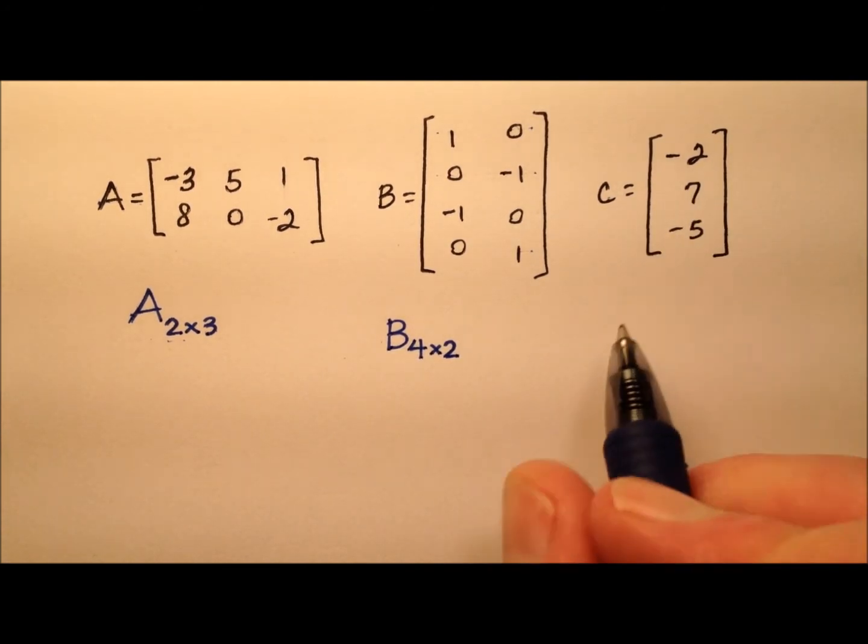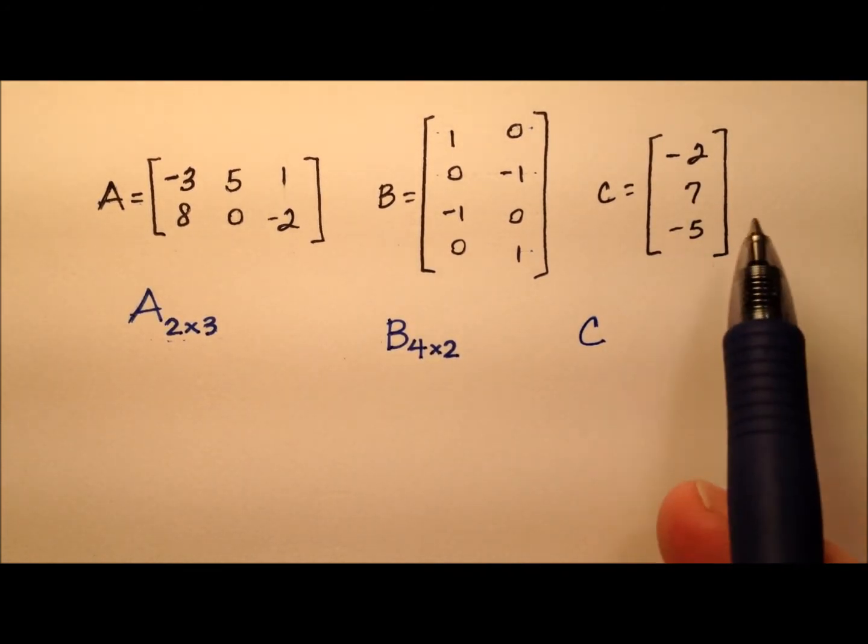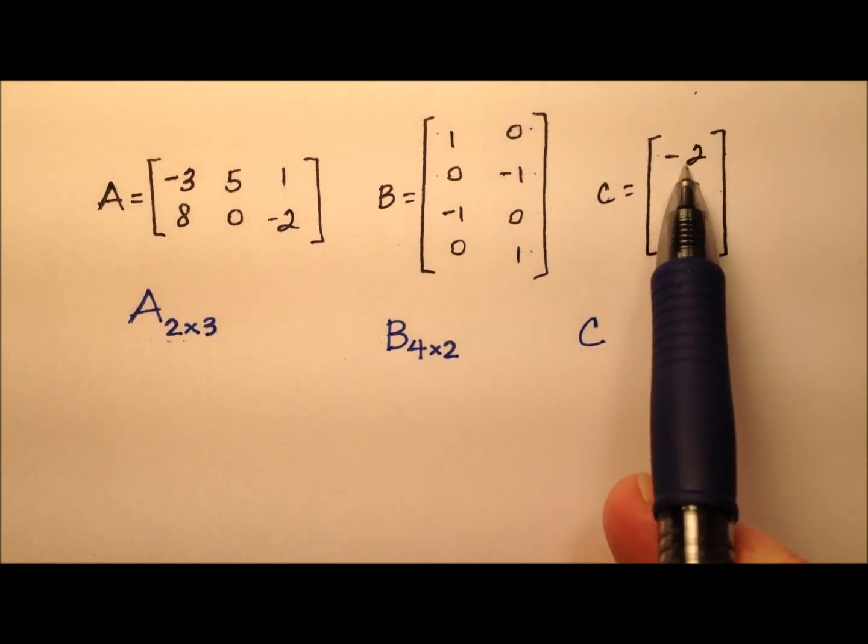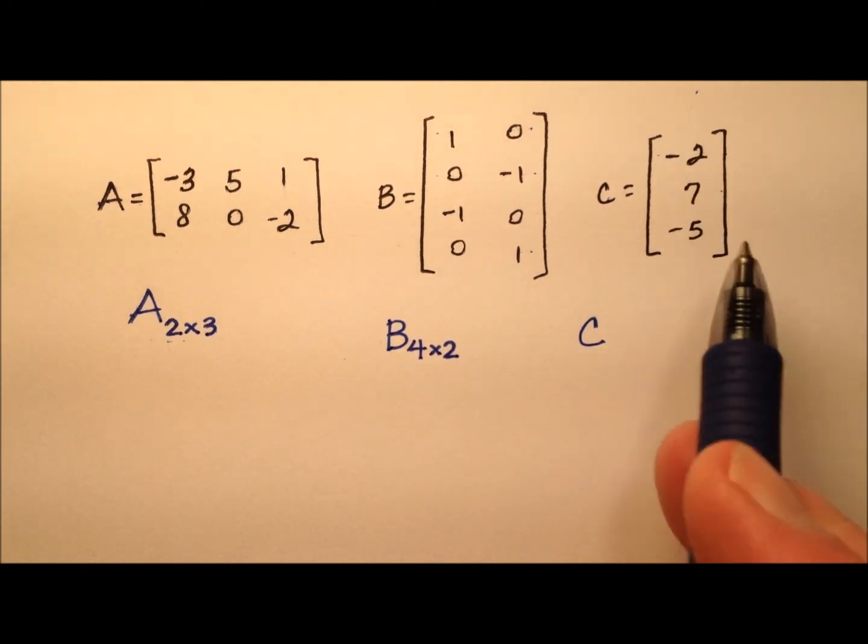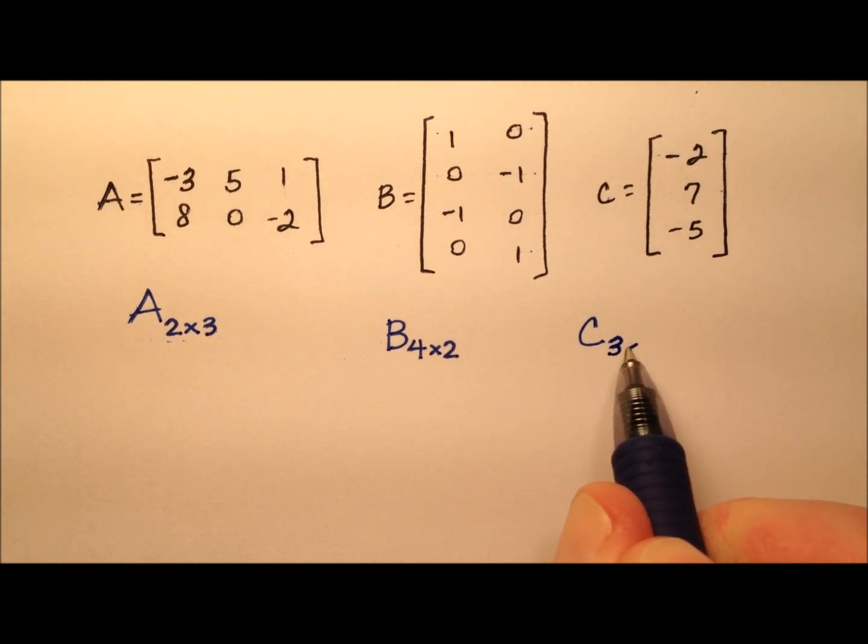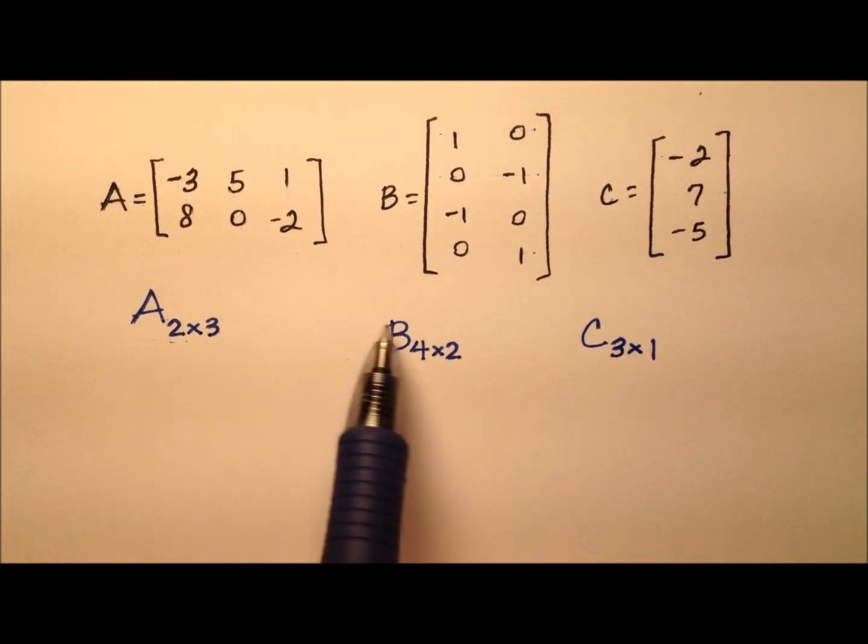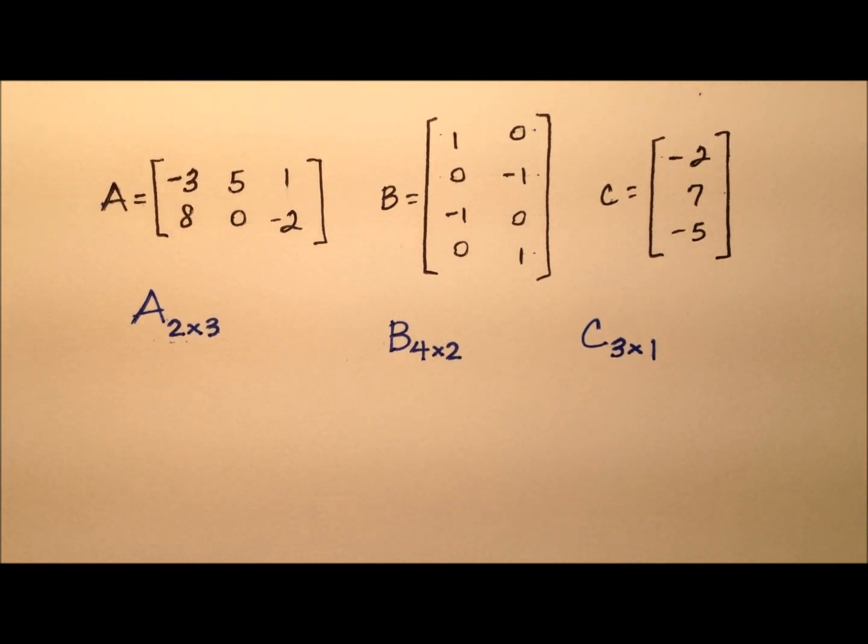And finally, matrix C. We're going to have 1, 2, 3 rows, but just this single column right here. So 1 column. We're going to call C a 3 by 1 matrix. That's how we can find the dimensions of these matrices.